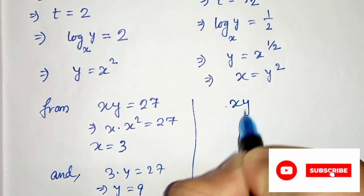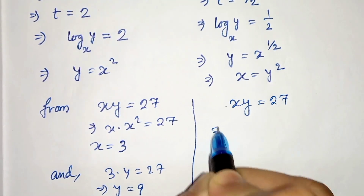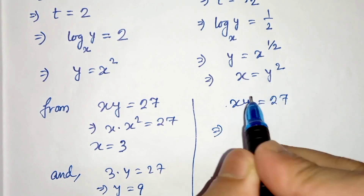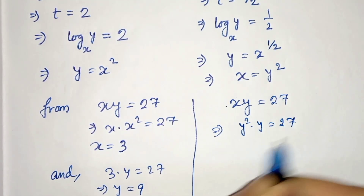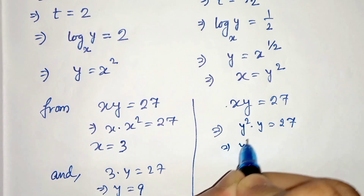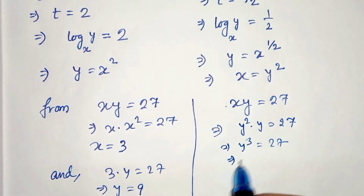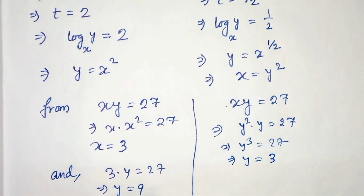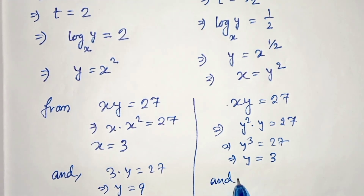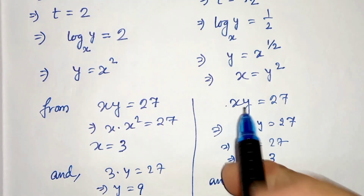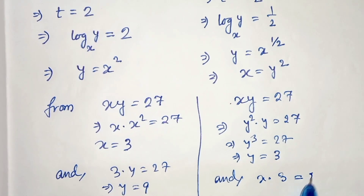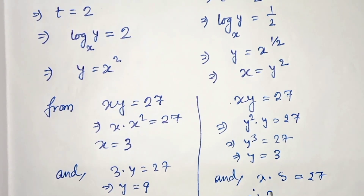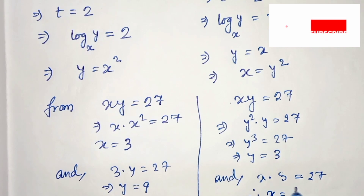Now substituting x equals y squared into xy equals 27, we get y squared times y equals 27, which is y cubed equals 27, so y equals 3. Putting y equals 3 back in gives x times 3 equals 27, therefore x equals 9.